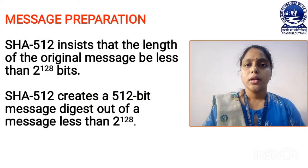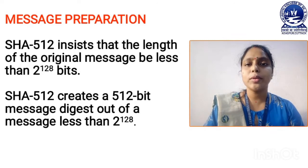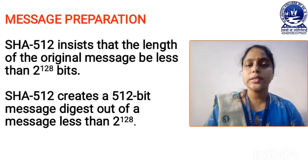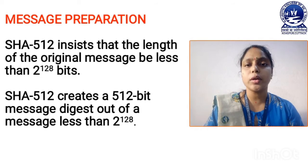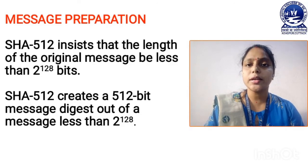Message preparation. In SHA-512, it always uses a message which size is less than 2 to the power 128 bits. If you are taking a message with size greater than 2 to the power 128 bits, then the SHA-512 algorithm cannot process this message, because it is designed to only process messages which size is less than 2 to the power 128 bits. The SHA-512 algorithm always generates a message digest of 512 bits from a message which size is less than 2 to the power 128 bits.